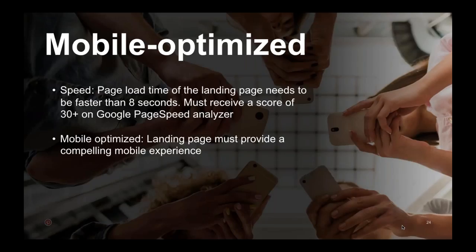The second theme for creative best practices and getting your pins approved for one tap is mobile optimization. There are two buckets under this theme. The first is speed: when the pinner clicks through and lands on the landing page, the page load time needs to be faster than eight seconds — beyond eight seconds, people will drop off. You can use the Google Page Speed Analyzer to check your client's pages; you must receive a score of 30 or above using that tool. The second piece is being mobile optimized — the landing page must provide a compelling mobile experience.